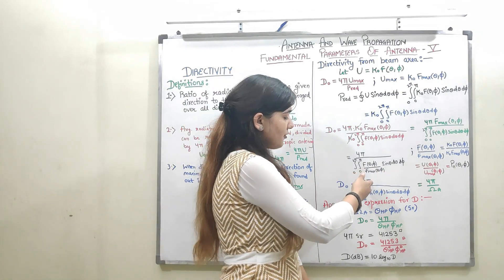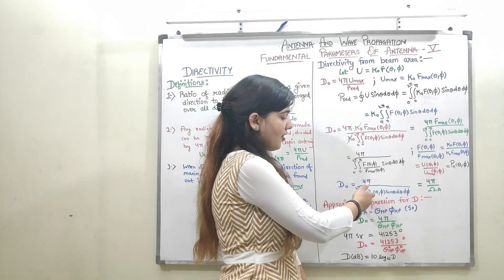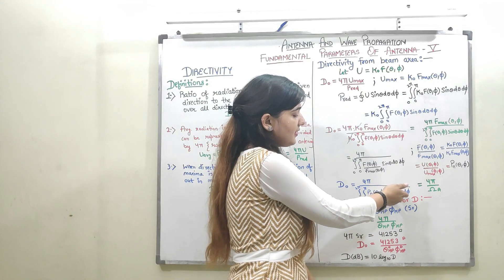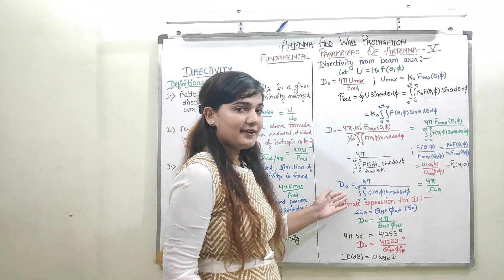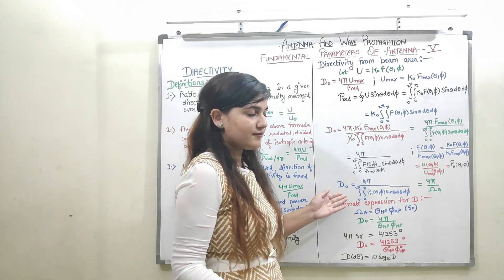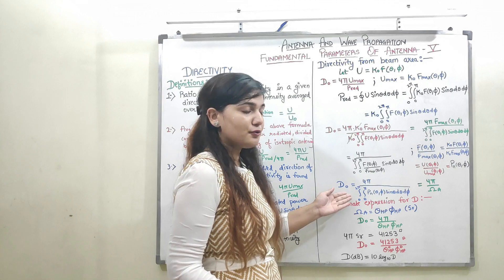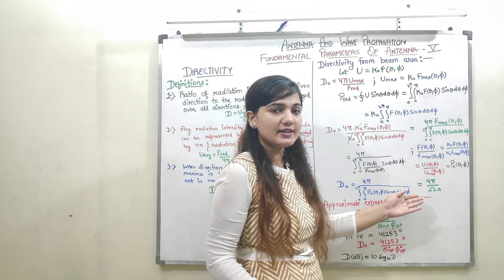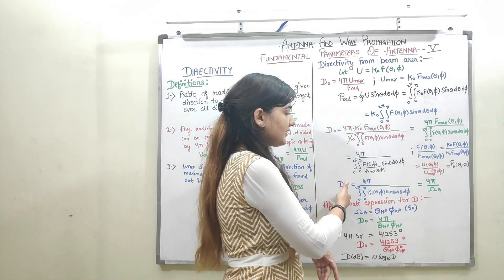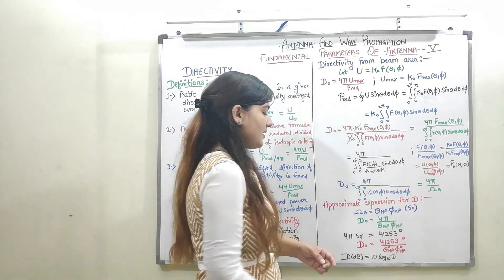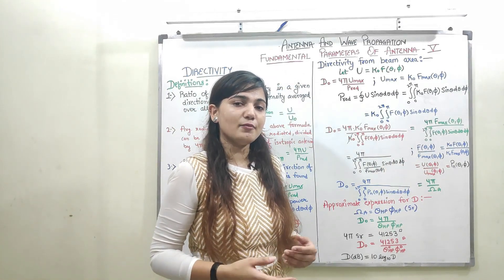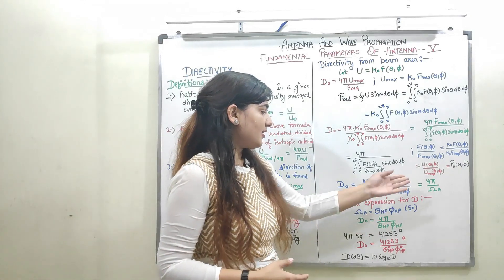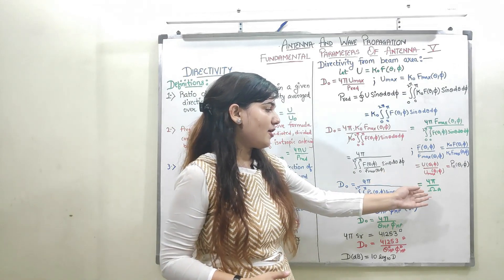Substituting the normalized power, D₀ is equal to 4π upon the double integration of normalized power P_n(θ, φ) integrated over the solid angle sin θ dθ dφ. From the previous video, the double integration of P_n(θ, φ) sin θ dθ dφ gives the beam area. Therefore, the directivity is equal to 4π upon the beam area.